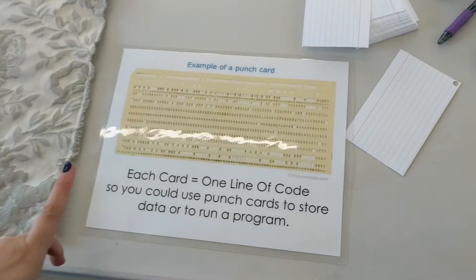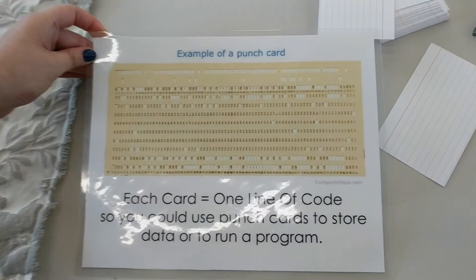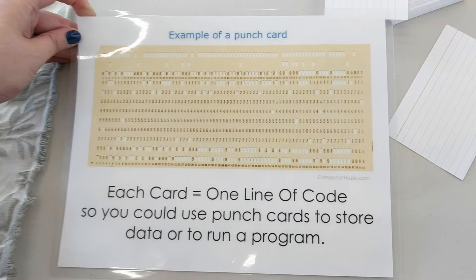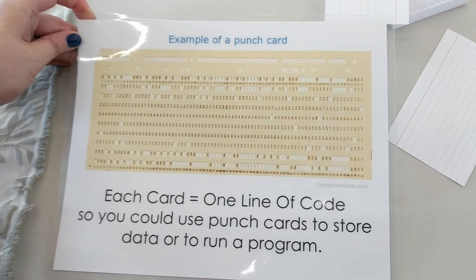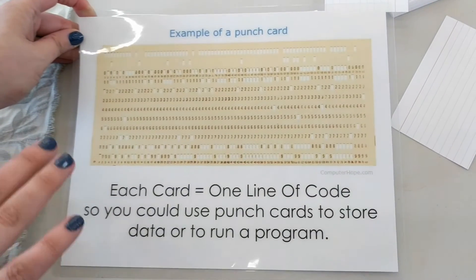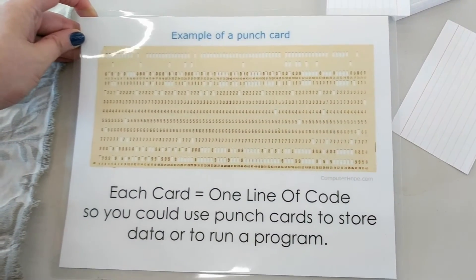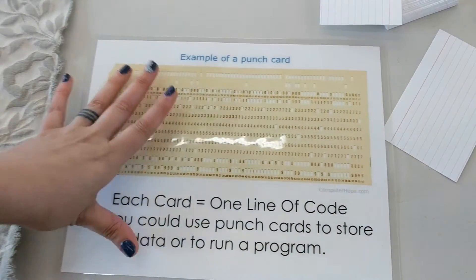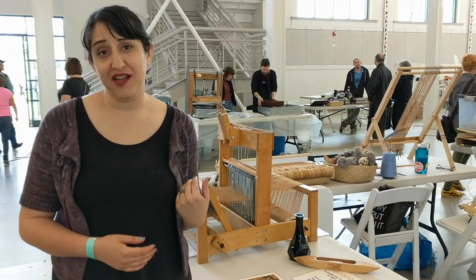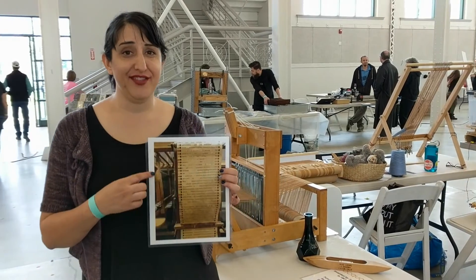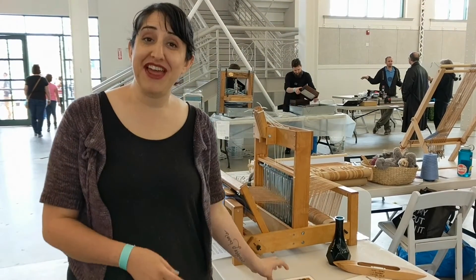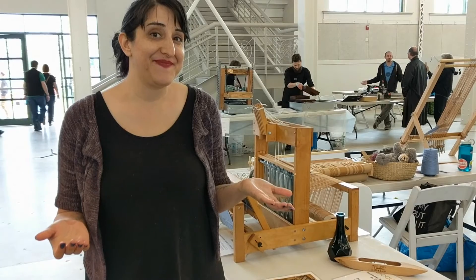This is a computer punch card. A computer punch card functions the same way that Jacquard's punch cards worked — you would program a single card to be either a line of code or part of a line of code, or it could store data. Same thing: it's binary, it's either an on or an off. Punch cards directly came from weaving technology. You might also recognize that this looks a lot like a player piano — player piano technology also came from weaving technology. On and off. Weaving is all binary. Thanks for joining me!